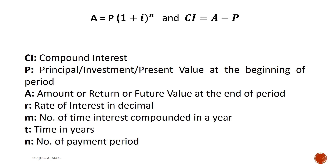Using the concept of compound interest, or interest on interest, we can calculate the amount or future value by the formula: A equals P multiplied by 1 plus I raised to the power N. Where A stands for amount, return, or future value at the end of the period. P stands for principal, investment, or present value at the beginning of the period. I stands for interest per period, and N stands for number of periods. Compound interest is also calculated using the formula: amount minus principal.